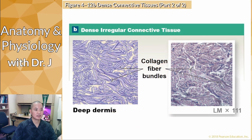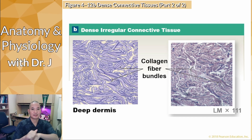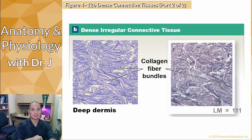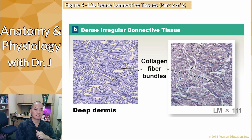The root word 'reticulum' refers to a network or mesh, so the reticular dermis is made up of collagen fibers and elastic fibers. This is why you can stretch your skin in multiple directions and it snaps back. As we age, these fibers start to break down — especially the elastic fibers — and our skin loses the ability to snap back to its original shape, which is why older people's skin starts to sag.